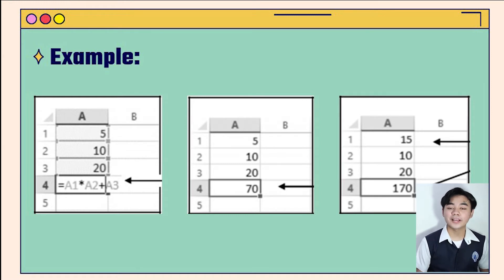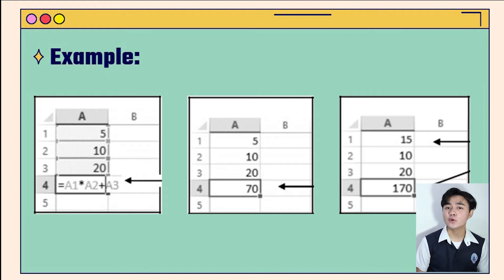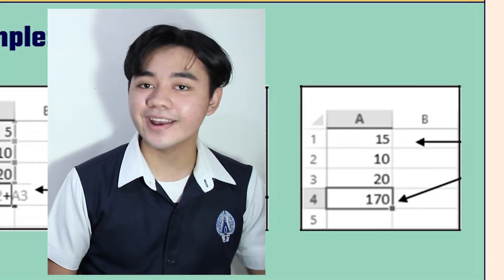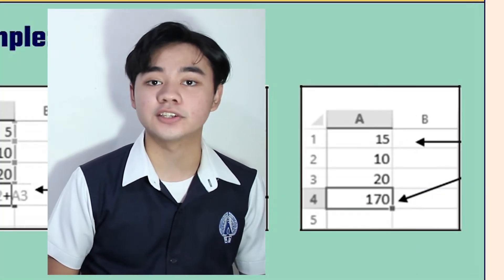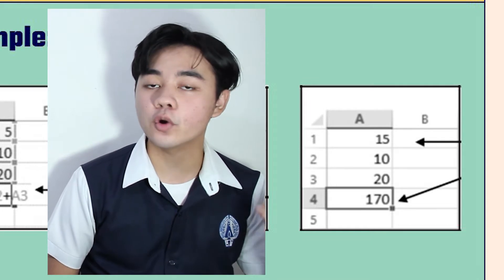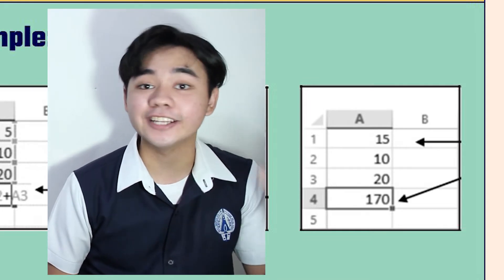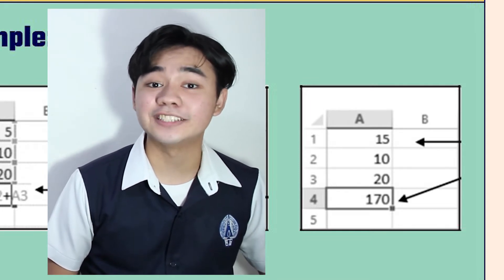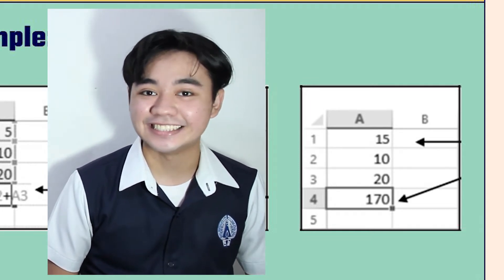For example, if you want to multiply A1 and A2 and then add 3, you simply type the formula and once you hit Enter, it will automatically calculate the total. Whenever you change a value in A1, A2, or A3, the total will also change automatically.